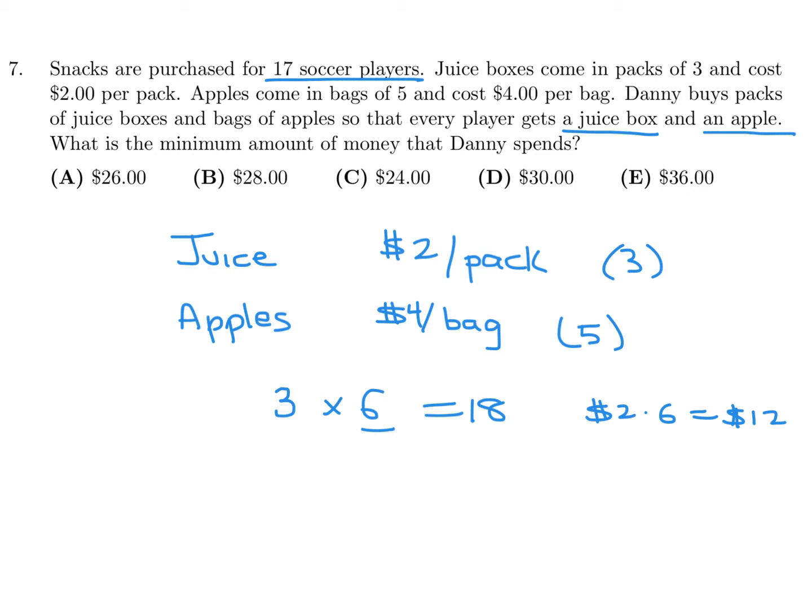Same story with apples - I need at least 17, so I'll buy 4 bags. Each bag has 5 apples, so that's 20, sufficient for 17 players. The cost is $4 per bag and I bought 4 bags, so that's $16. The total cost is $12 plus $16, which is $28. Number 7, the answer is B.